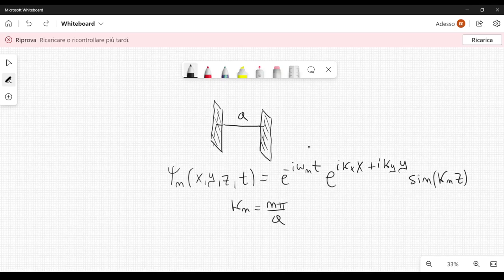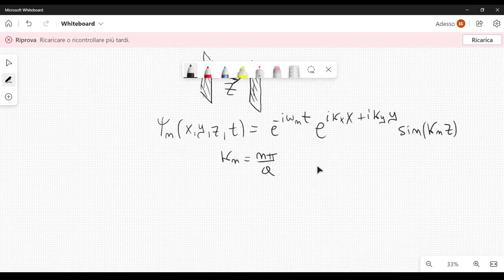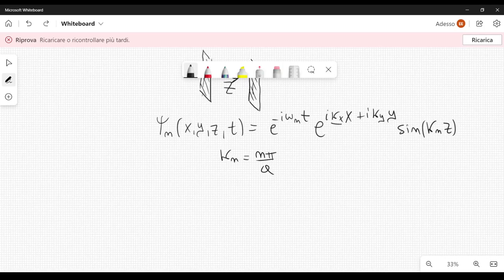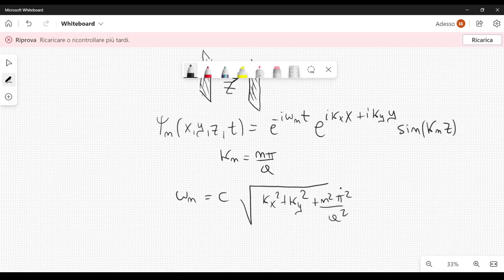This form here satisfies the wave equation that can be derived from Maxwell's equations. And there is the sine here because this function must vanish at z equal to 0 or z equal to a. So, remember that this is the z direction, here, because the plates are parallel to the x, y plane. So, this is important. And from Maxwell's equations, or from the wave equation, one can derive a relationship between omega n and kx, ky, and kn. In particular, one can find omega sub n equal to c, speed of light, times the square root of kx squared plus ky squared plus n squared pi squared over a squared. And you can check that with these conditions, we have that Psi sub n satisfies the wave equation.